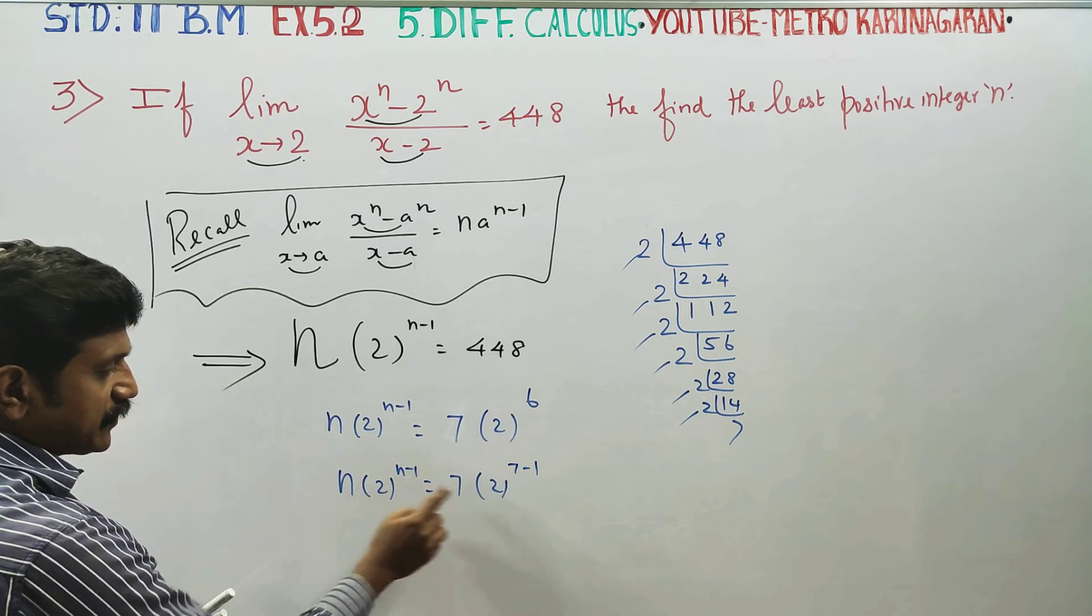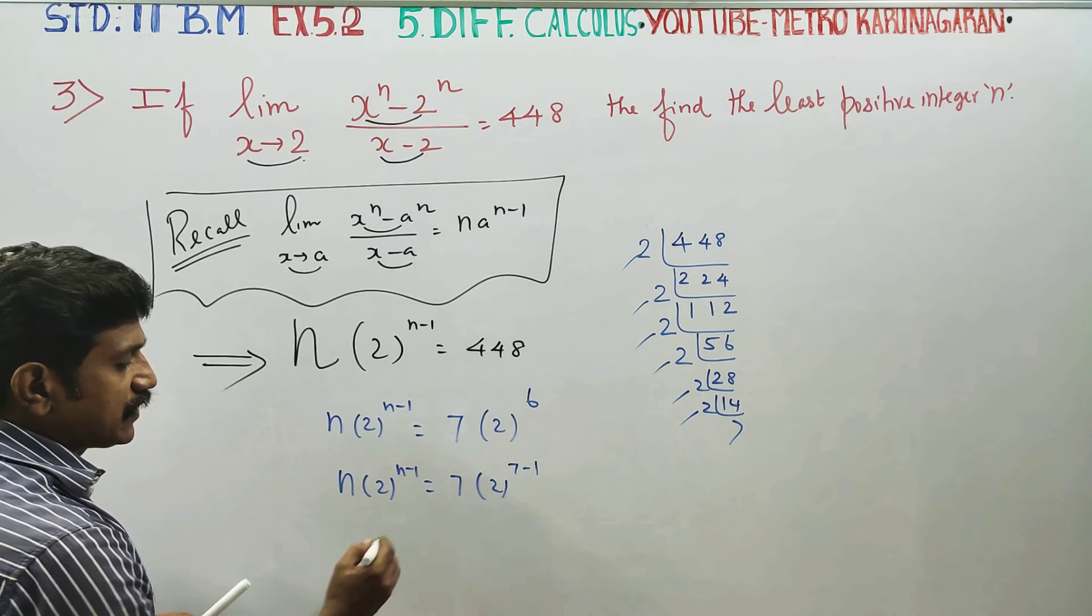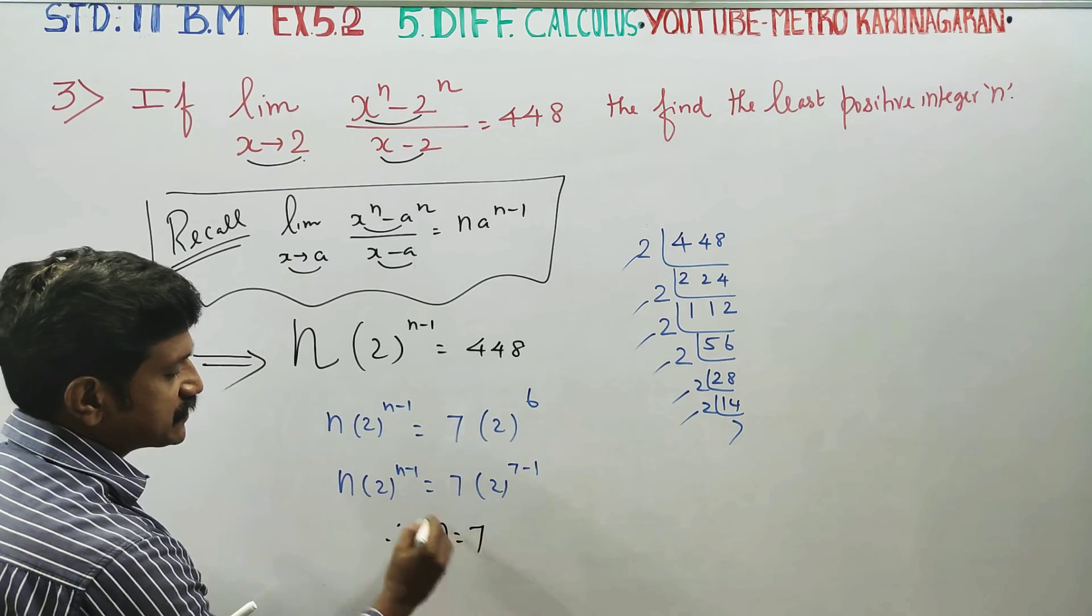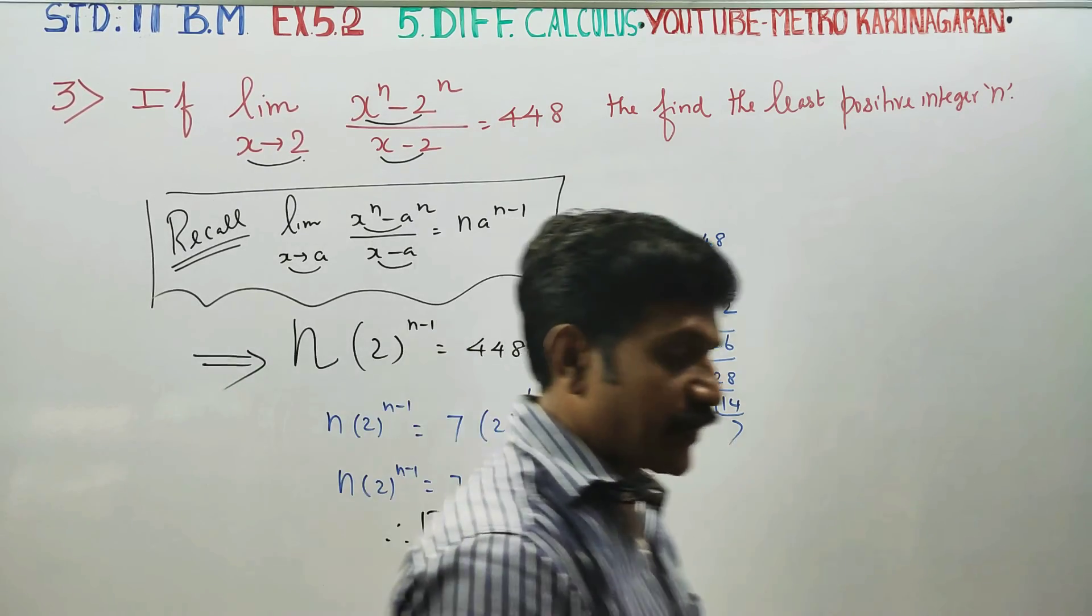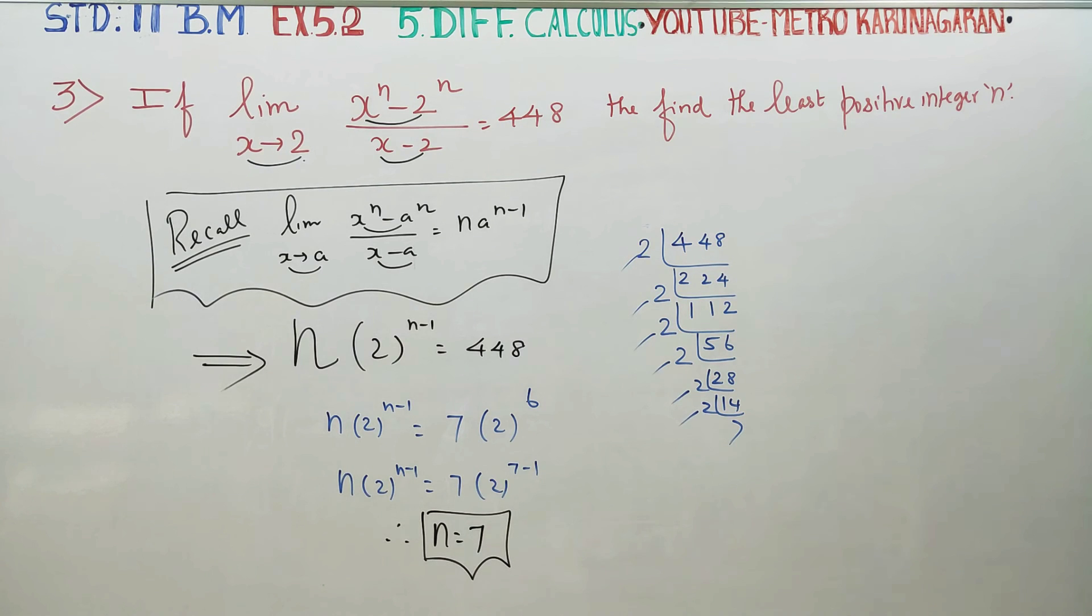Since 2 power 6 is 2 power 7 minus 1, the value of n is directly 7. Therefore, n equals 7. Thank you.